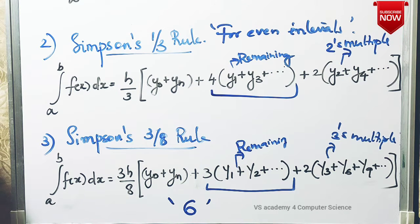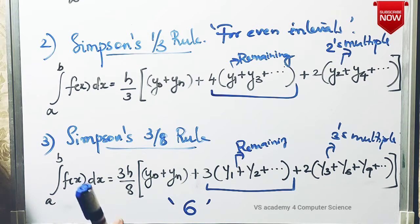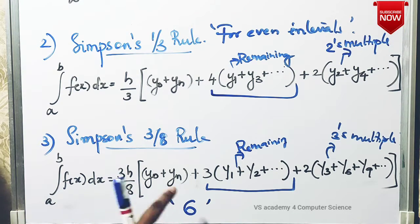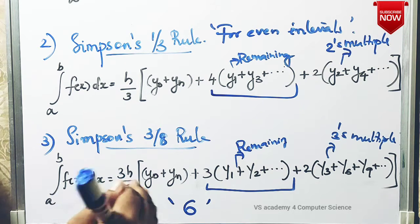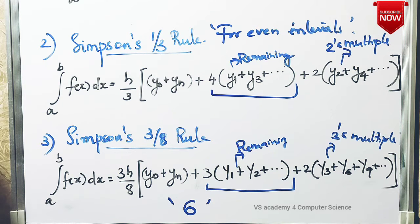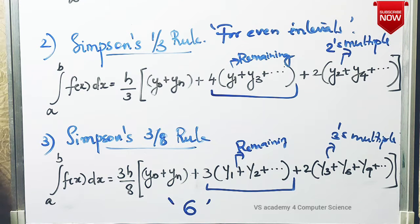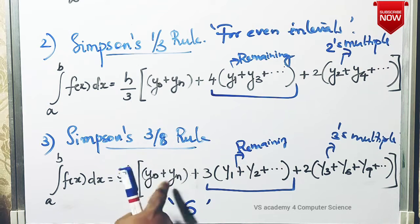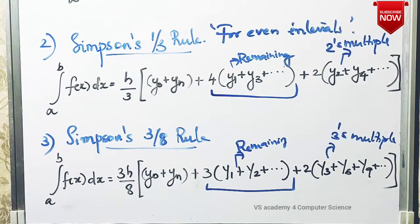So here is the summary of the total number of intervals and which rule to apply. The Trapezoidal rule applies for any number of intervals. Simpson's one-third rule applies for an even number of intervals. Simpson's three-eighth rule applies when the intervals are a multiple of 3. If all rules apply — for example with 6 intervals, which is both even and a multiple of 3 — you can choose any of the three rules. So we have the three rules in total.